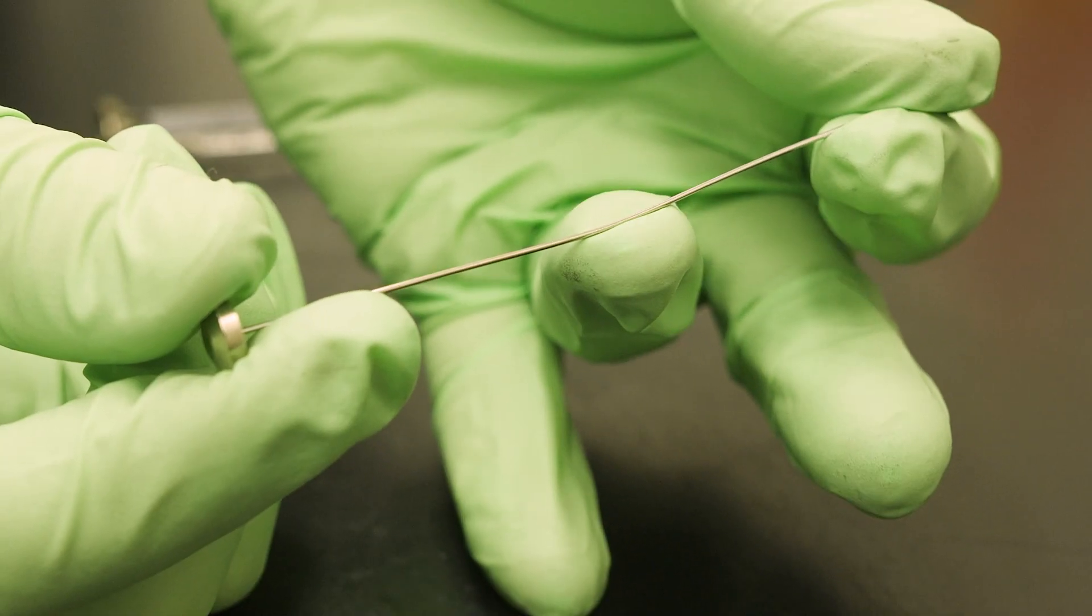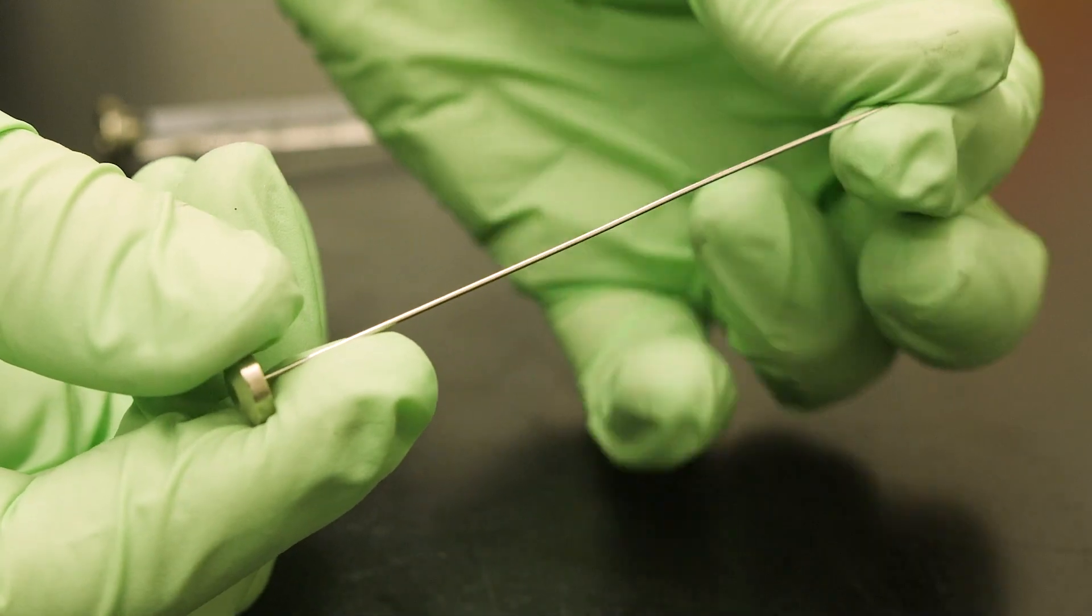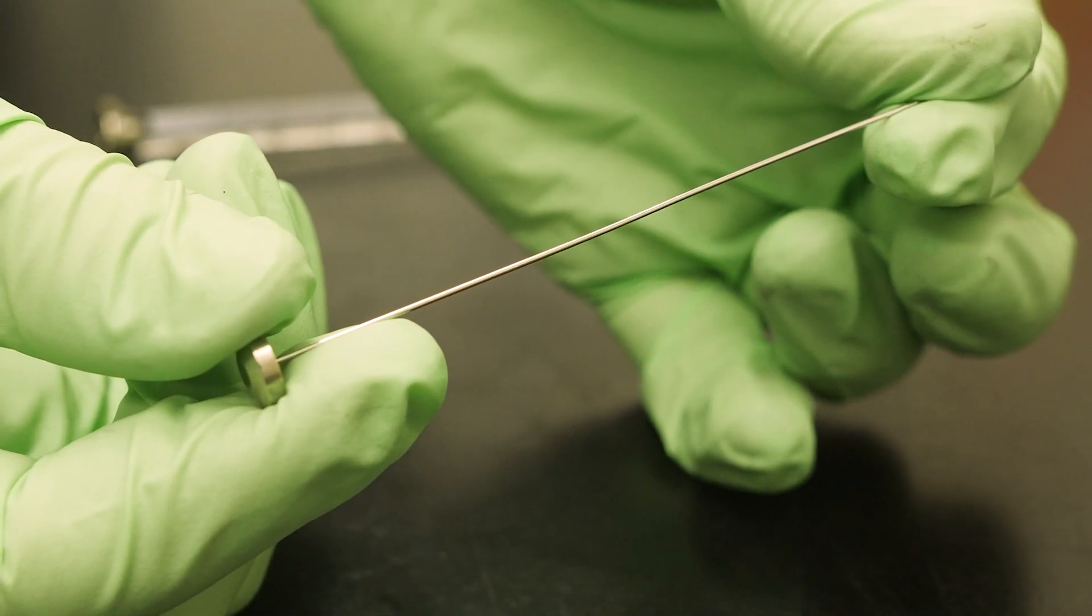Plungers should be checked for smooth operation. If the plunger is not smooth, check for bends or debris in the barrel. Bent plungers can sometimes be fixed by removing the plunger from the barrel and gently but firmly applying a reverse bend.